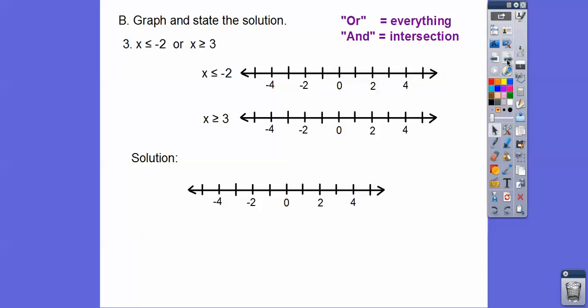Here's an OR where the graphs go in opposite directions. Closed circle on negative 2 going left, and closed circle on 3 going right. When we squeeze them together, OR means everything being graphed — so it's the blue and the red combined. There's the solution for this graph.